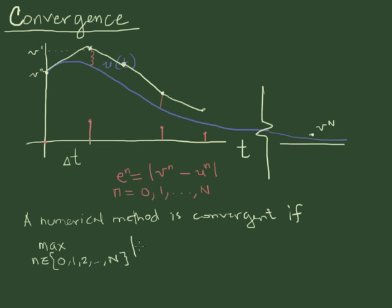So it's n being any one of these indices of the error, vn minus un. And that needs to go to 0 in the limit as delta t goes to 0. So a numerical method is convergent if the maximum error goes to 0 as the time step also goes to 0.